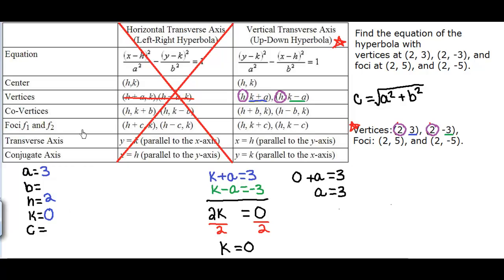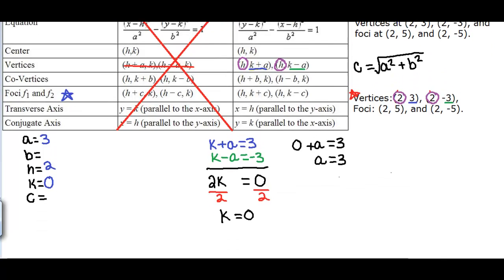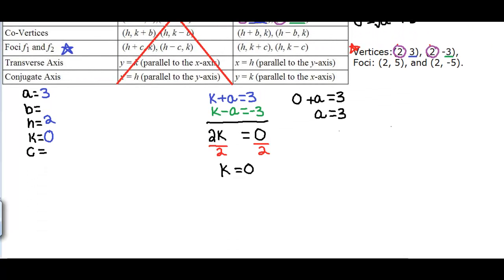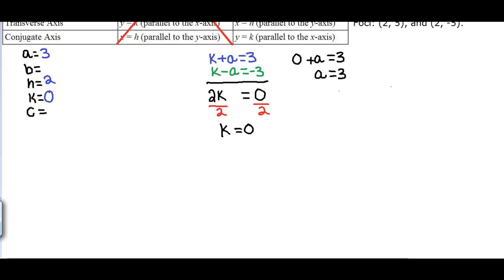Now that we have A, H and K, we have to find a way to solve for B and C. Using what's given, we were given the foci, so we're going to have to use those set of points to solve for C and then we're going to go back and solve for B. So first, let's focus on solving for C.